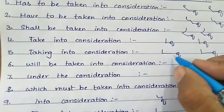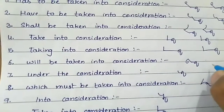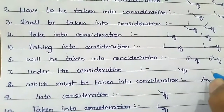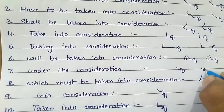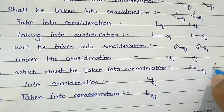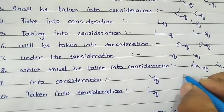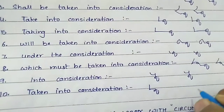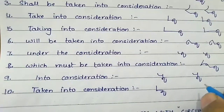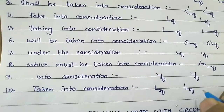You would know that writing it in long form also gives its sound properly. Then comes: will be taken into consideration. Next: under the consideration. Then: which must be taken into consideration. And lastly, the most used phrase: taken into consideration — note the 'n' sound at the end in 'taken into consideration'.